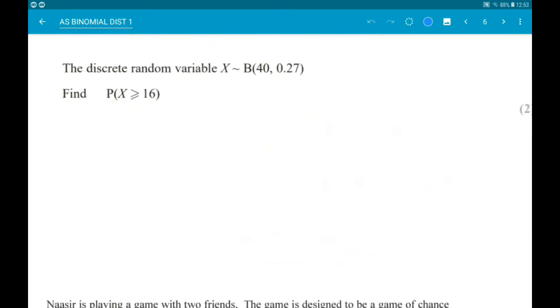Next up we have a nice quick one. The discrete random variable x is binomially distributed with n as 40 and p as 0.27. Find the probability x is greater than or equal to 16.